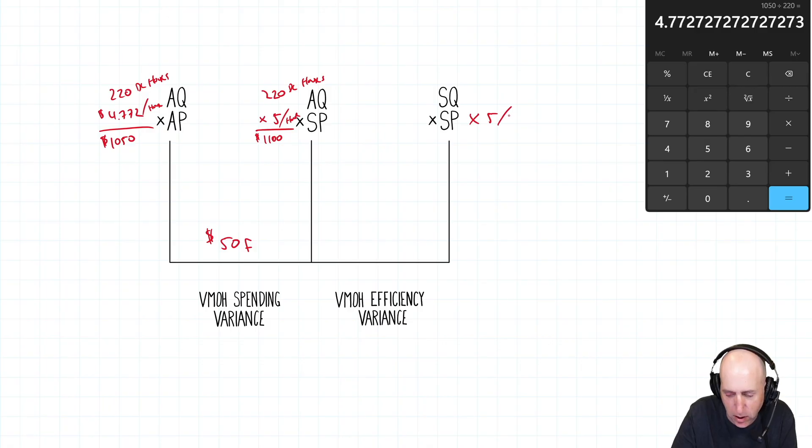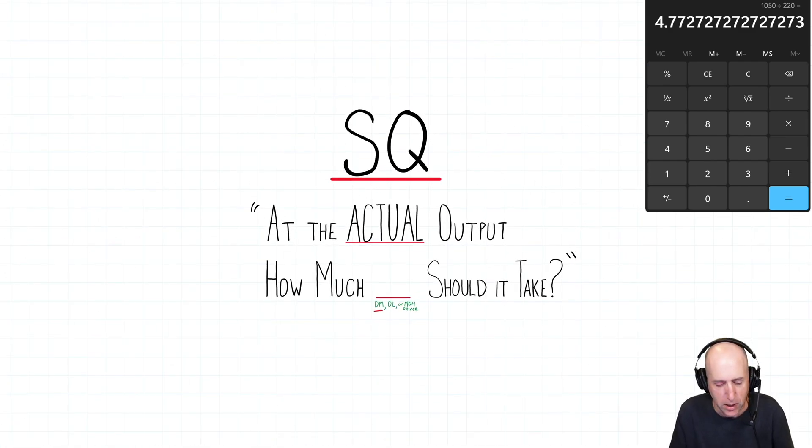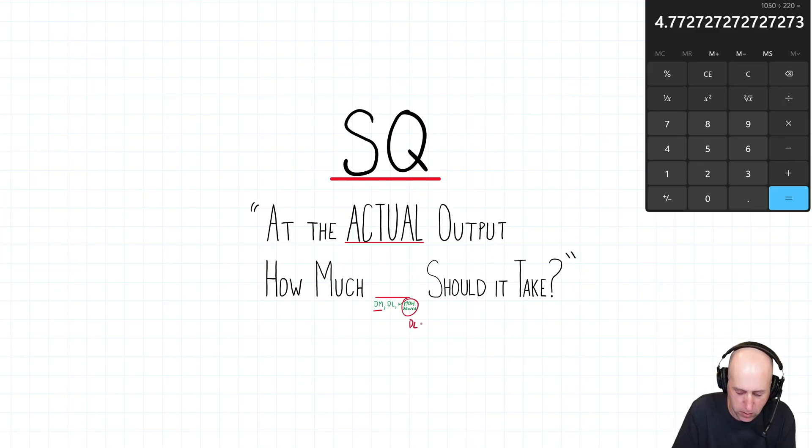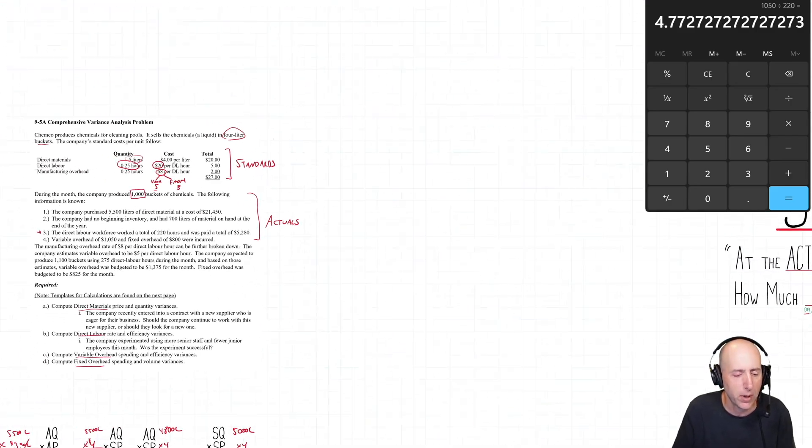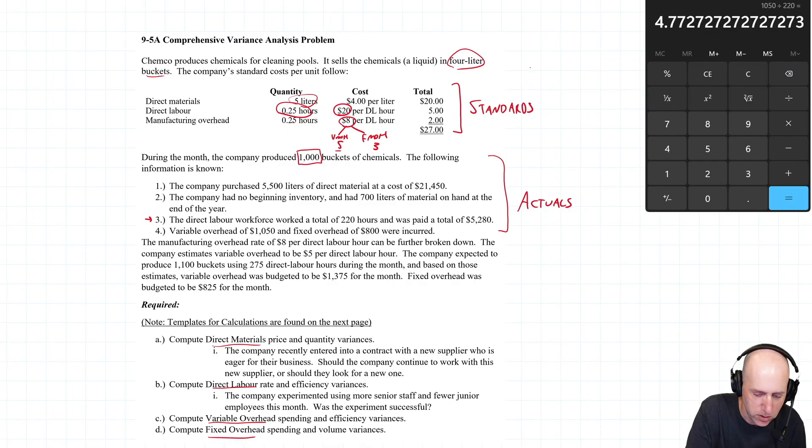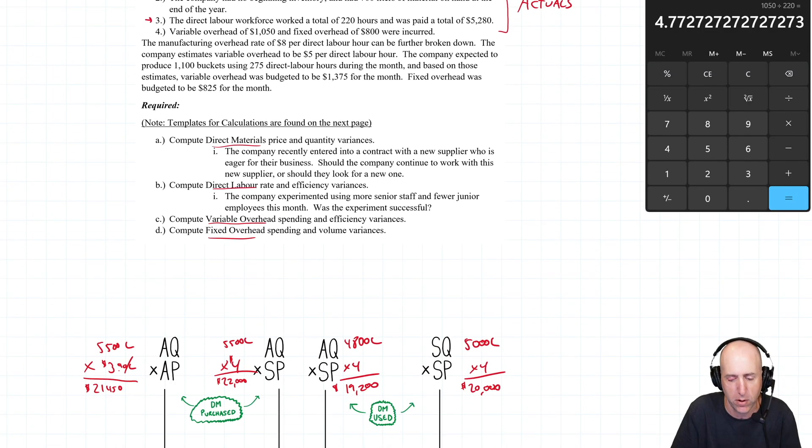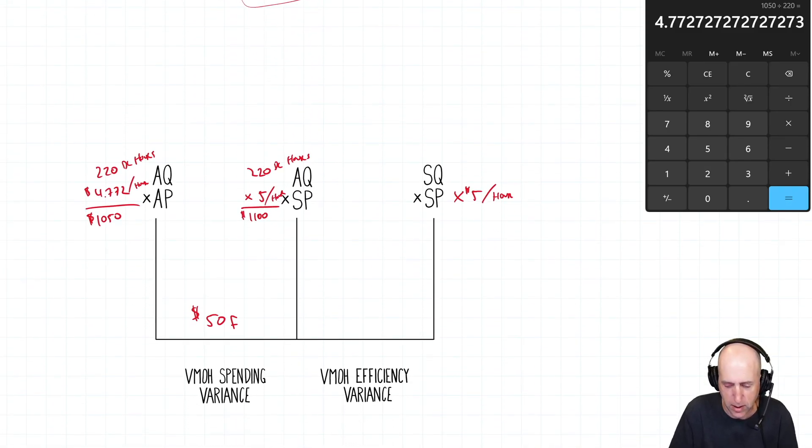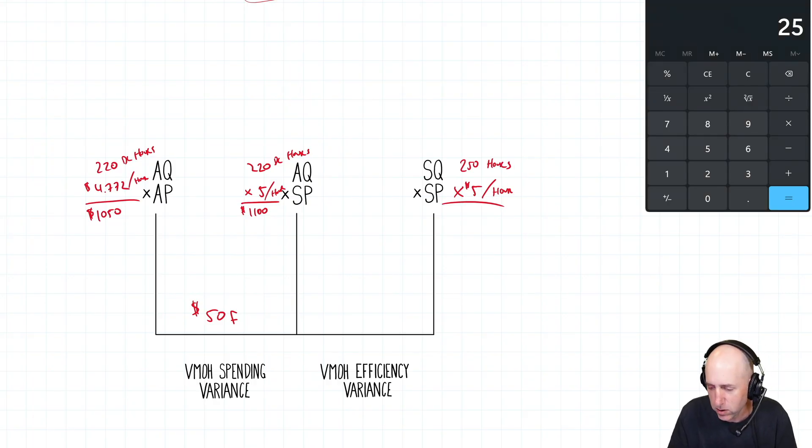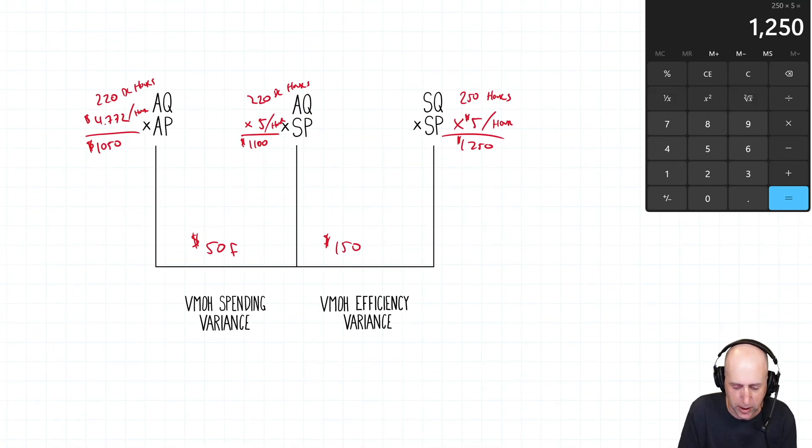SQSP, SP remains $5 per hour. SQ, we say, back to this thing: at the actual output, how much, in this case, overhead driver, which is direct labor hours, should it take? How many direct labor hours should it take? Well, we just did the math. It's 0.25 hours, it's 1,000 buckets. It should take 250 hours, same as with our labor variance. And so it is the same. 250 hours times $5 an hour, 250 times 5, $1,250. So the difference here is $150. And if it's favorable up here, it's going to be favorable down here. It is favorable. We can just compare: our actual quantity, it took us 220 hours, it should have taken us 250 hours. We saved time, and so we were efficient with labor and therefore with overhead.